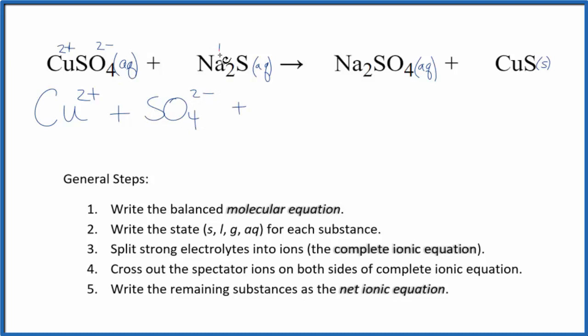Sodium, group 1, has a 1+ charge. The sulfide ion is 2-. So we have 2 of those sodium ions, 2Na+, plus the sulfide ion, S 2-. And these are the reactants in our net ionic equation.